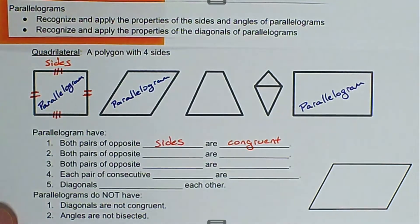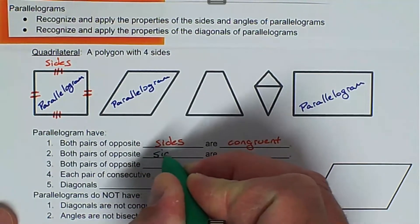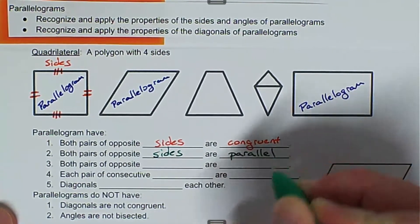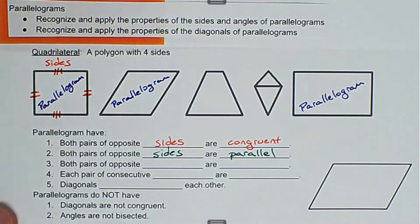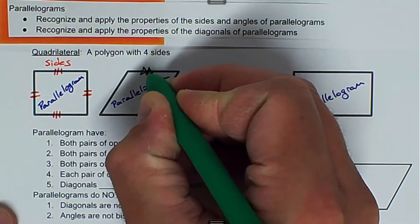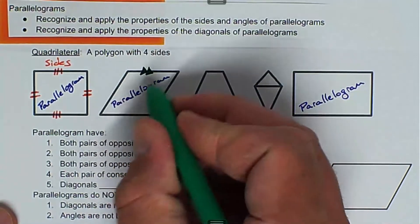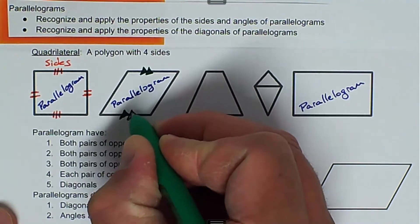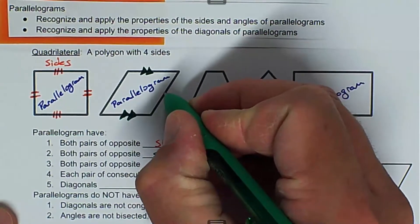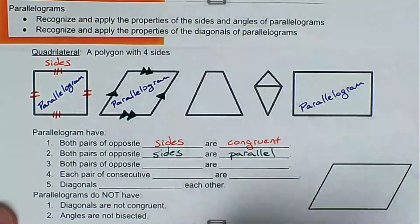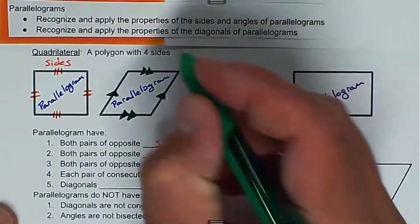The next property is that both pairs of opposite sides are parallel. The way that we mark parallel is with arrows. We can put two arrows on the top and two arrows on the side opposite — that is the sign for parallel. And then we can put just one arrow on the right and one on the left. This property is about sides being parallel.